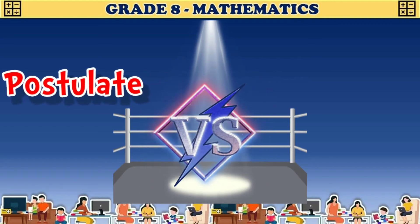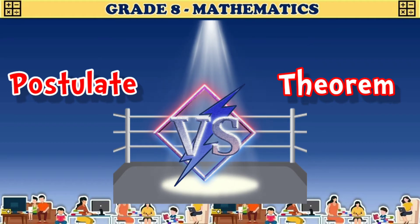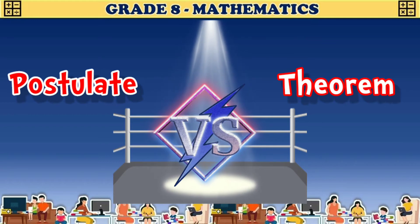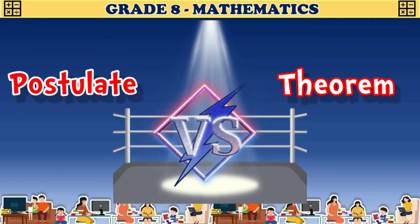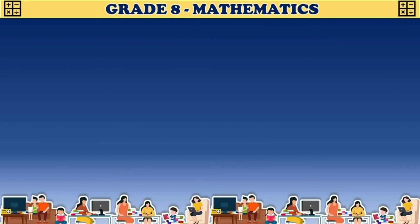The difference between a postulate and a theorem: a postulate does not need to be proven to be accepted as true, so it can be used directly as a reason in proving mathematical statements. A theorem, on the other hand, cannot be used as a reason in proving until it has first been proven to be true.